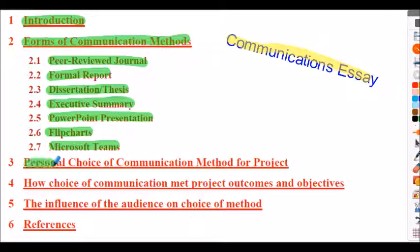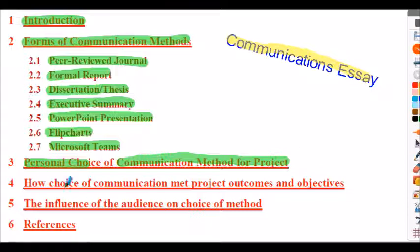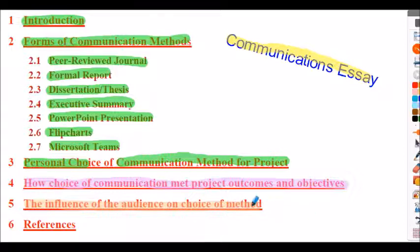Section three is where you decide on your communications method and justify your choice from the list above. State why you've chosen that particular method — don't just say because I suggested it. Hopefully you'll see genuine relevance in applying it to your research study. If you want to go for higher grades, you could build additional sections into the communications essay: one on how the choice of communication method met the project outcomes and objectives, and another considering the influence of the audience on your choice. Don't forget to formally state all references.